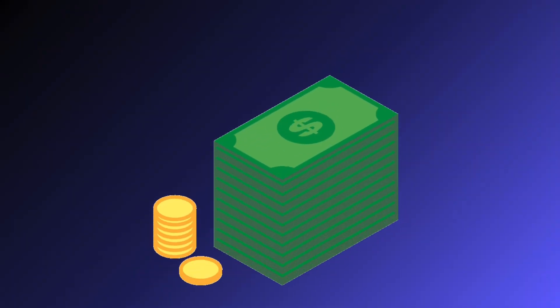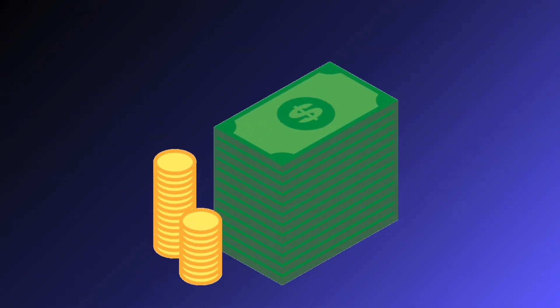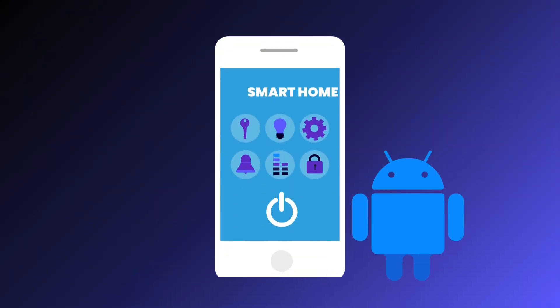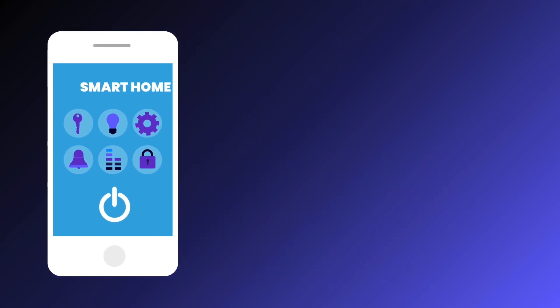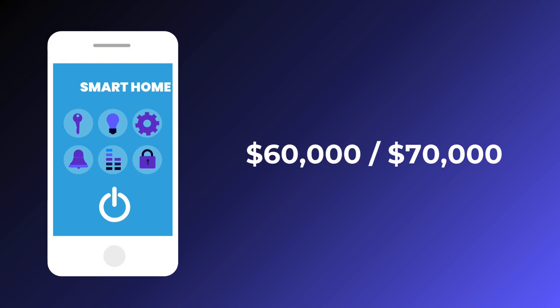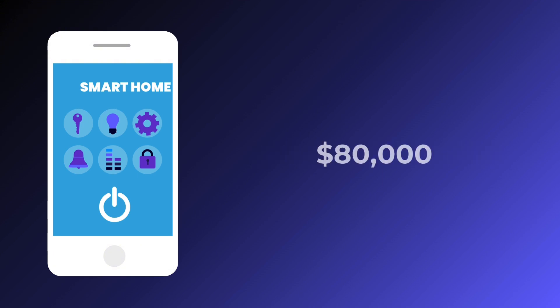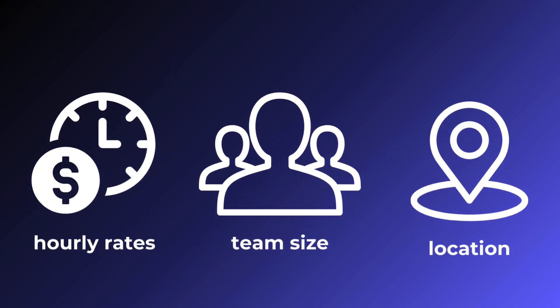The cost of developing a smart home app varies based on platform and complexity. Android apps may cost less per hour but take longer to develop. Using a ready-made platform with integrations can cost between $60,000 and $70,000, while custom-made code can exceed $80,000. The final price depends on hourly rates, team size, and location.